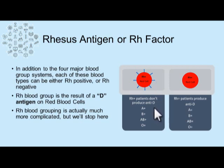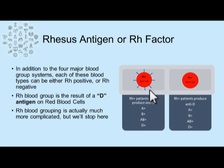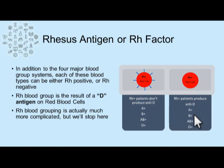So we have four major blood types: A, B, AB, and O. In addition, we can have a D antigen present, giving us a positive Rh factor. This gives us twice as many blood types. We now have A positive, B positive, AB positive, and O positive, or no D antigen present and a negative Rh factor, giving us A negative, B negative, AB negative, or O negative.